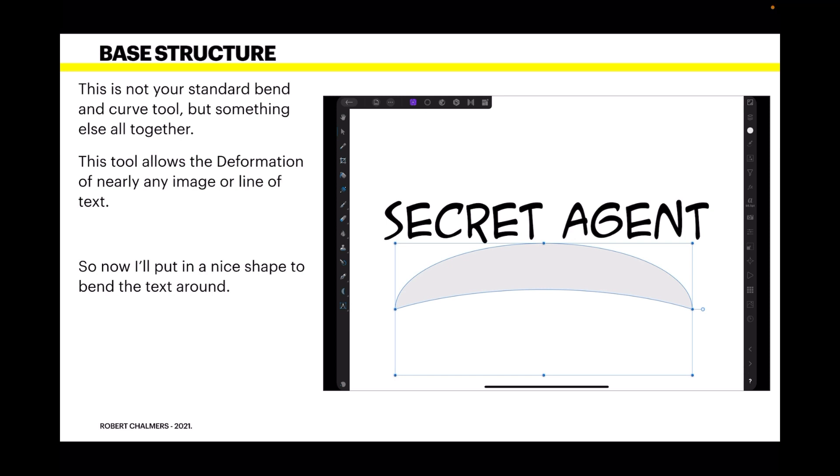So now I'll put in a nice shape to bend the text around. And we've got a kind of a half moon shape there I've curled around, so we've got secret agent sitting on top of that.